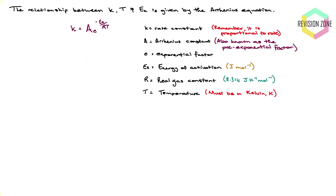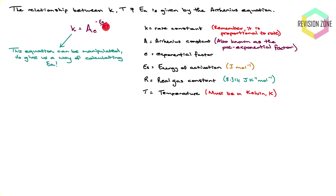To work out the activation energy from the Arrhenius equation, it needs some manipulation first. The equation has an exponential relationship between temperature and the rate constant, which isn't very useful directly. To make it useful I need to remove the exponential factor by taking the inverse function of e, which is natural logs. That's what we'll look at next.